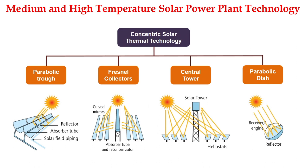Let us see the technologies used for solar thermal power plants. The first technology is parabolic trough. As you can see, this is a parabolic reflector and this is the absorber tube through which heat transfer fluid flows. Cold fluid enters in one section and in the other section hot fluid is collected.